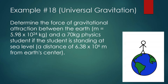Let's look at this problem. It says: determine the gravitational force of attraction between the Earth, which has a mass of 5.98 × 10²⁴ kilograms — that is the actual mass of the Earth — and a 70-kilogram physics student, if the student is standing at sea level, a distance of 6.38 × 10⁶ meters. We should know that the force of gravity the student experiences and the force of gravity the Earth experiences are exactly the same, just in opposite directions.